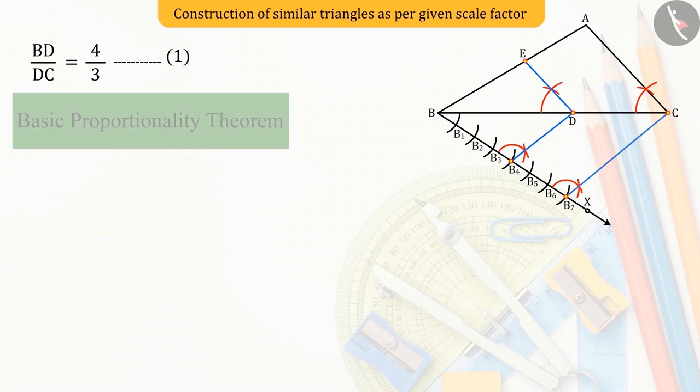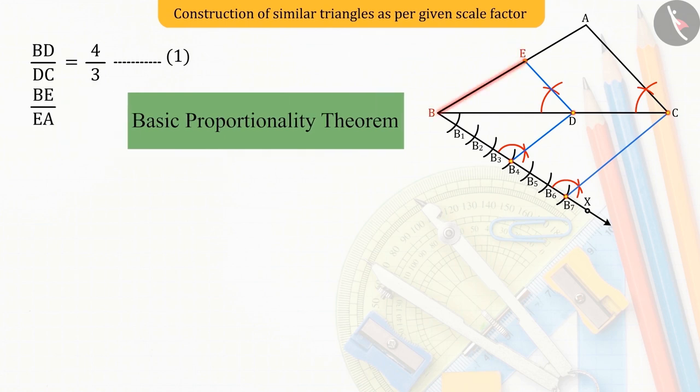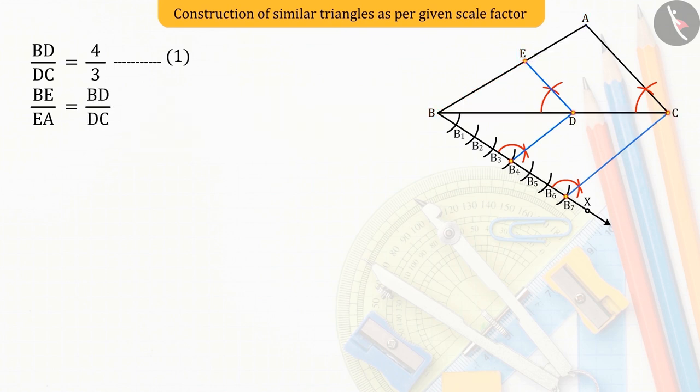Hence, from the basic proportionality theorem, BDE upon EA is equal to BD upon DC, which is equal to 4 upon 3.